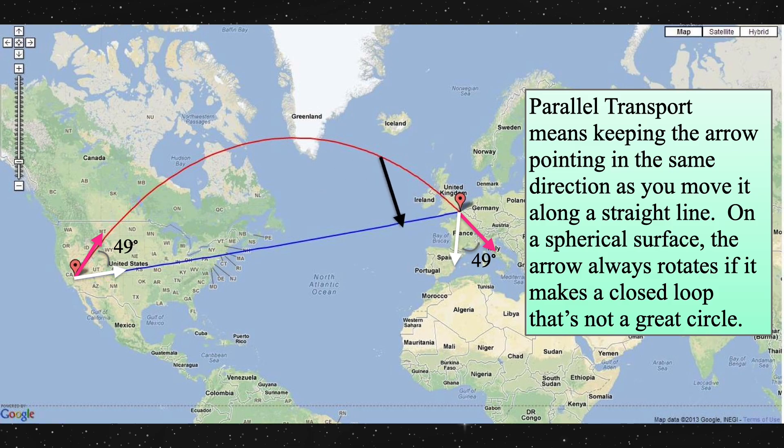Notice how the black arrow, when transported between two points on a straight line in the two-dimensional, spherically curved space, will rotate quite a bit. The black arrow is basically the viewpoint of someone looking out a window, and the pink arrow is the true direction of the plane.